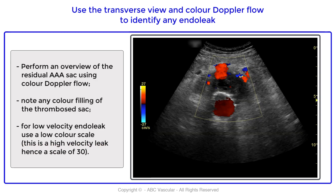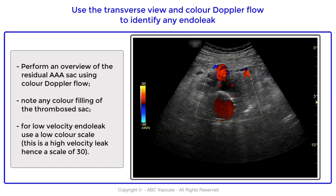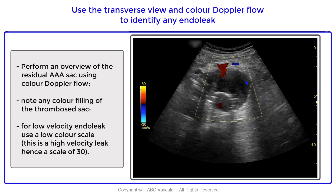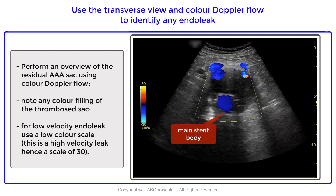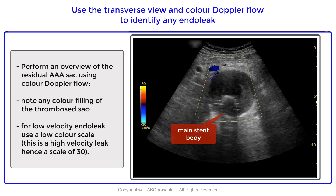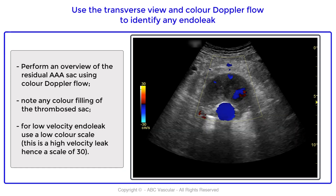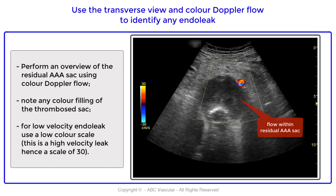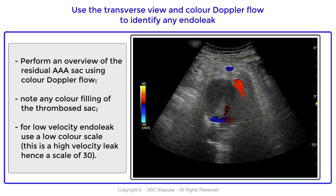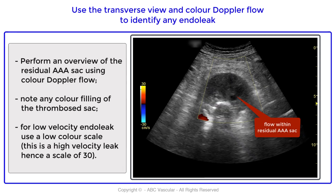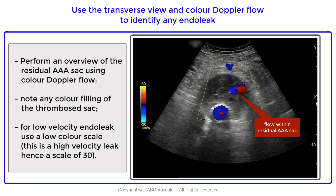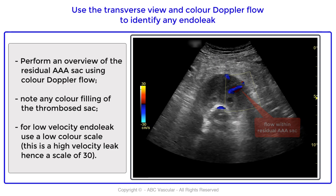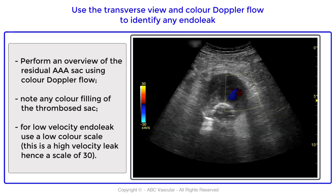We then apply color Doppler flow and perform an overview of the endovascular repair to identify any flow filling within the thrombosed residual AAA sac. We can spot evidence of color flow entering from a blood vessel which is outside of the residual thrombosed abdominal aortic aneurysm.